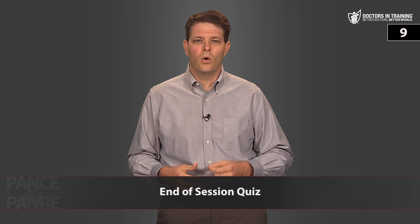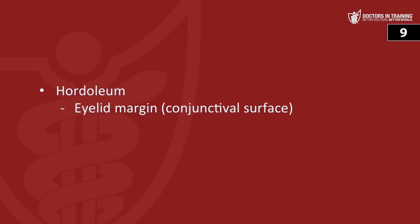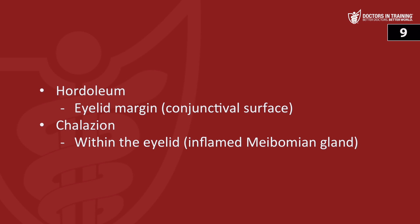What distinguishes a hordeolum from a chalazion? A hordeolum is swelling at the eyelid margin on the conjunctival surface, while a chalazion is swelling within the eyelid from an inflamed meibomian gland.